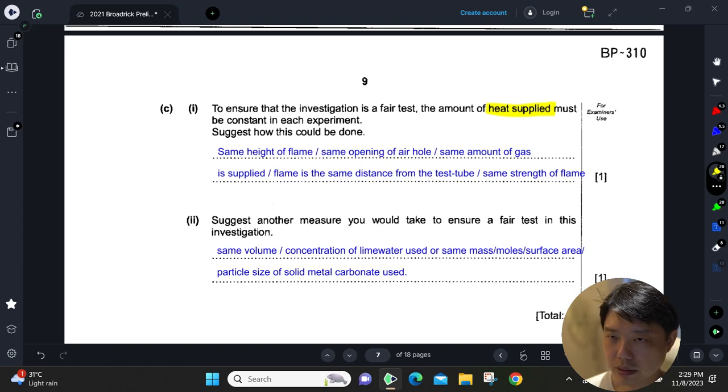How big the air hole is, whether you turn the flame to luminous or non-luminous—that will also affect the amount of heat that's been produced. Same height of the flame, flame is same distance from test tube, and the strength of flame, which is essentially the same thing. So it's either the strength of the flame or the distance of the flame from the test tube.